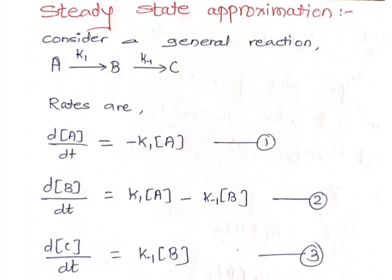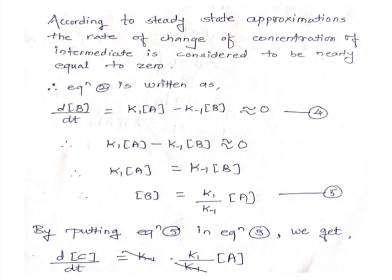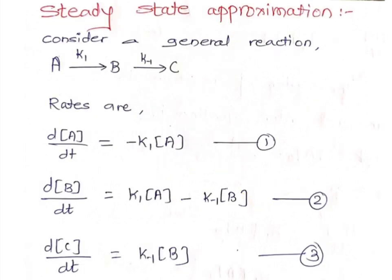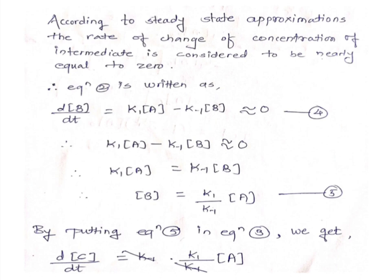Then dC/dt: C is our product, so the rate of change of concentration of C with respect to time equals K-1 times concentration of B. These are equation numbers 1, 2, and 3 respectively. According to steady state approximation, the rate of change of concentration of intermediate with respect to time is considered to be nearly equal to 0. From equation 2, applying SSA: dB/dt equals K1[A] minus K-1[B] is nearly equal to 0. This is equation number 4.